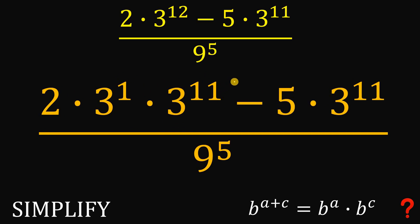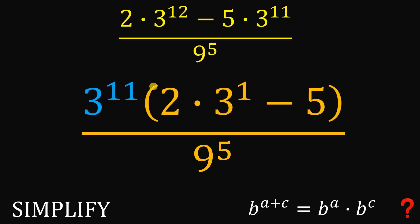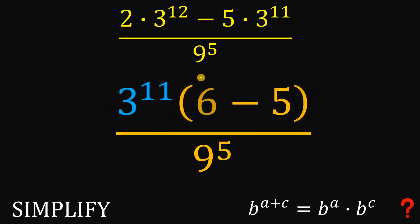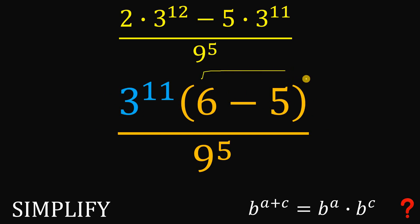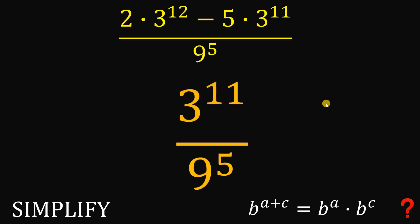Notice that we have a common factor of 3 raised to the power of 11. We will factor it out, giving us 3 raised to the power of 11 multiplied by the quantity 2 times 3 raised to the power of 1 minus 5. Simplifying inside: 2 times 3 is 6, and 6 minus 5 is 1. So 3 raised to the power of 11 times 1 is simply 3 raised to the power of 11.